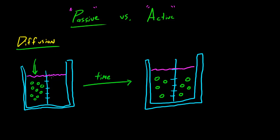The definition is: the movement of molecules from areas of higher concentration — where there are more molecules — to lower concentration, areas where there are fewer molecules. So pretty much in diffusion, molecules spread out randomly and uniformly.